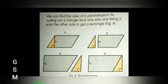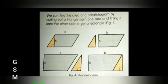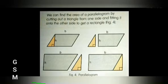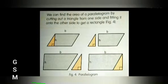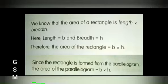We can find the area of a parallelogram by cutting out a triangle from one side and fitting it onto the other side to get a rectangle. We know that the area of a rectangle is length into breadth, where length equals b and breadth equals height. Therefore, the area of the parallelogram is equal to b into height, where b is the base and height is the height.